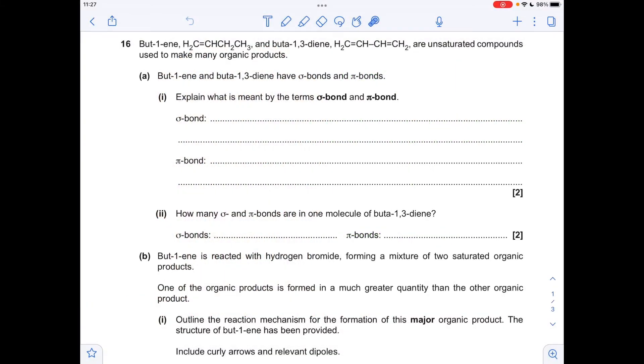The question starts with a couple of definitions: sigma bond and pi bond. A sigma bond involves the direct or end-to-end overlap between two orbitals, and a pi bond involves the side-to-side overlap between two p orbitals.